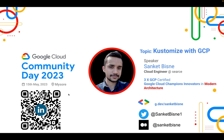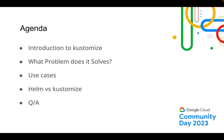The topic today is Kustomize with GCP. We'll be seeing why Kustomize is used, what the best use cases are, how we use Kustomize in day-to-day life, why it came into picture, what the alternatives are, and a whole bunch of things related to Kustomize. The agenda covers: introduction to Kustomize, what problem it solves, use cases, day-to-day usage, and a comparison with Helm, followed by a Q&A session.